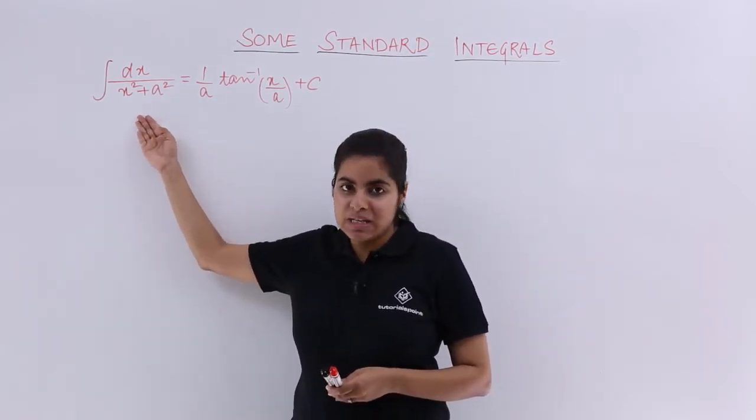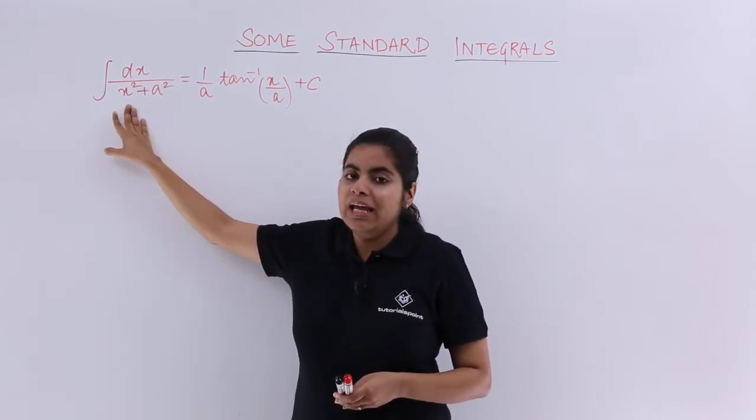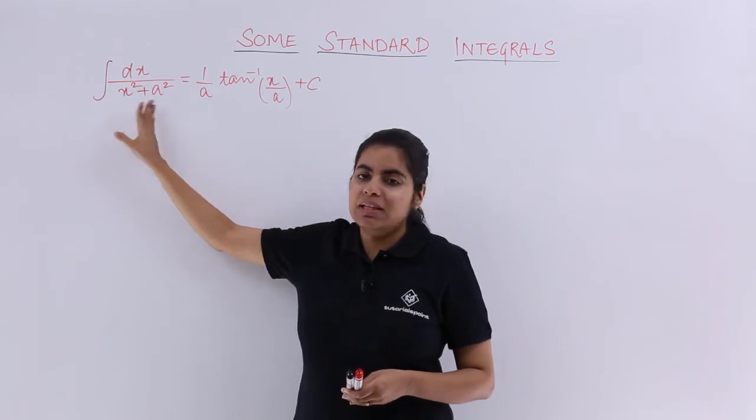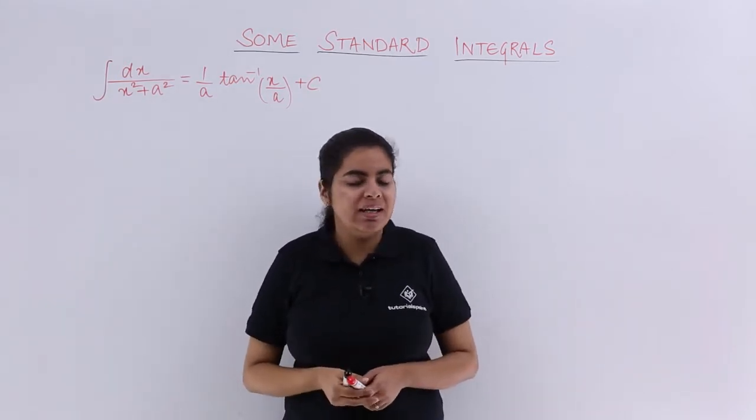We will have to go for some substitution. If I write x is equal to a sine theta, what will happen? It will become a square sine square theta, a square comes common, sine square theta plus 1, no formula, cannot help.